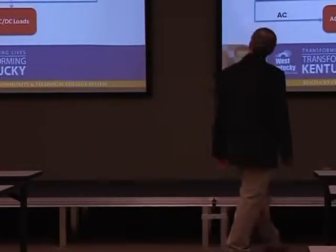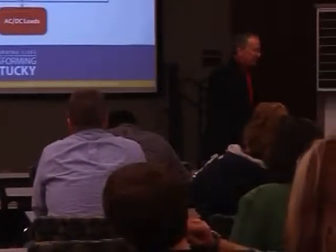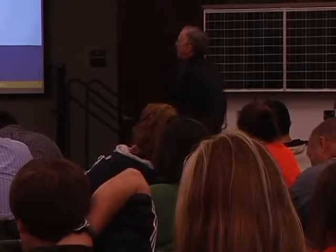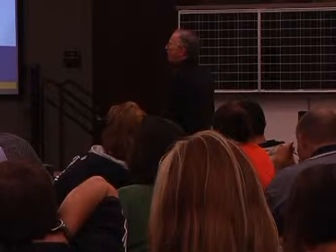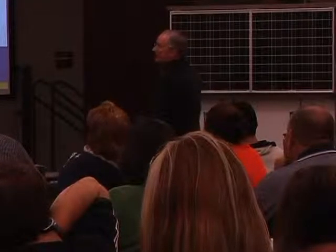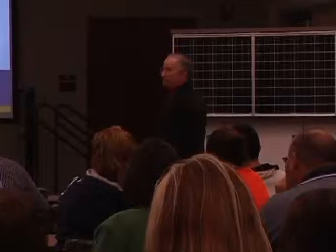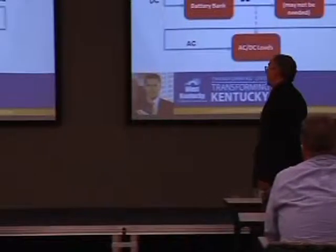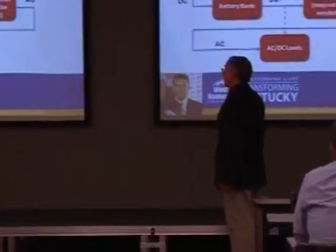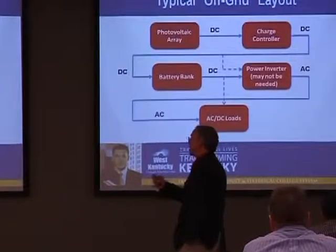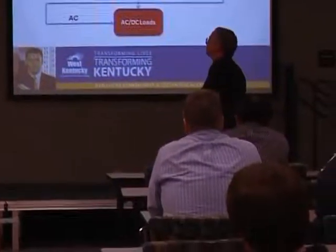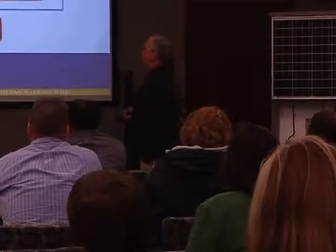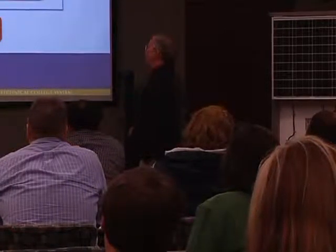Some charge controllers are designed to power the inverter directly in case the batteries are fully charged and the arrays are still producing something. And if you have only DC loads, you can come right off the battery bank. This is the typical off-grid layout — we'll look at an on-grid layout in a minute, but it's almost the same.